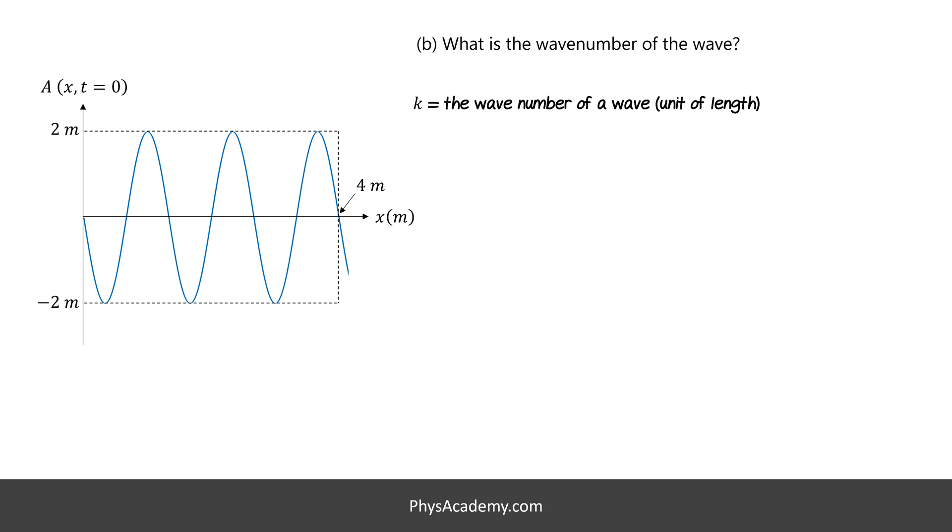In part B, we are asked to calculate the wave number. For the wave number, we need to analyze the displacement versus x-axis plot. As a reminder, we call this plot a snapshot of a wave. I'm going to start by writing the wave number equation. K is the wave number. Lambda is the wavelength. So, to find the wave number, first, we need to calculate the wavelength.